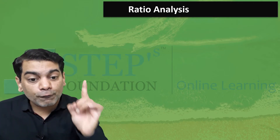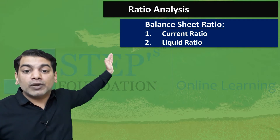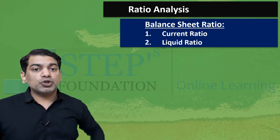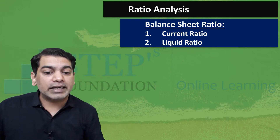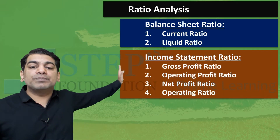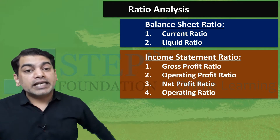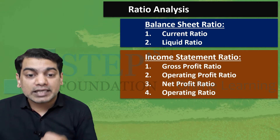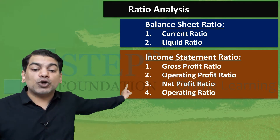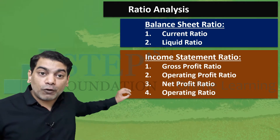The first category of formulas is called balance sheet ratio. Under balance sheet ratio, we have to learn how to calculate current ratio and how to calculate liquidity ratio — that is simple liquid ratio. So in balance sheet ratio, we learn two ratios: current ratio and liquid ratio. The second category of ratios is income statement ratio. We have to learn four formulas: gross profit ratio, operating profit ratio, net profit ratio, and operating ratio.